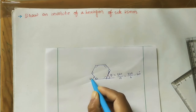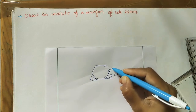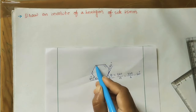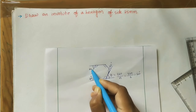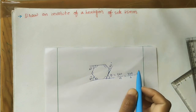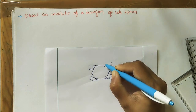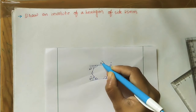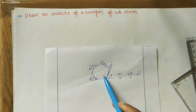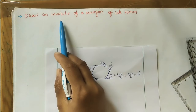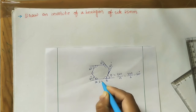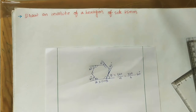At every corner the outer angle is 60 degrees. If we extend each side, the angle formed is also 60 degrees at all corners. So all outer angles are the same — 60 degrees throughout. Now let us first draw the hexagon, and after that we will construct the involute.